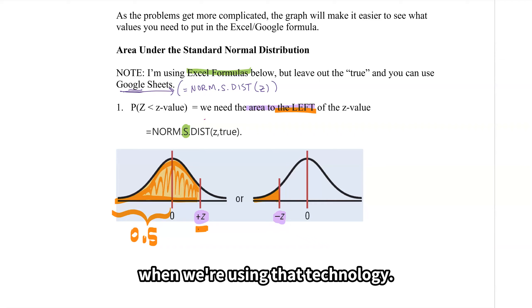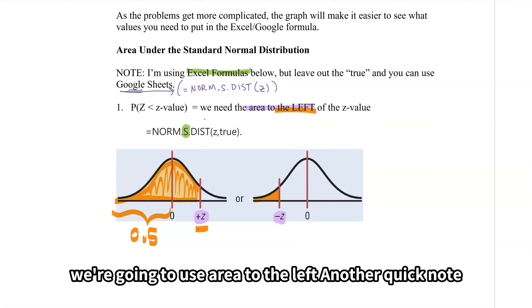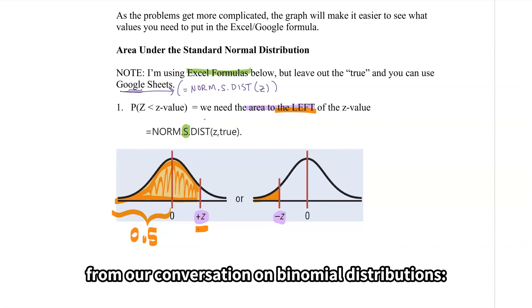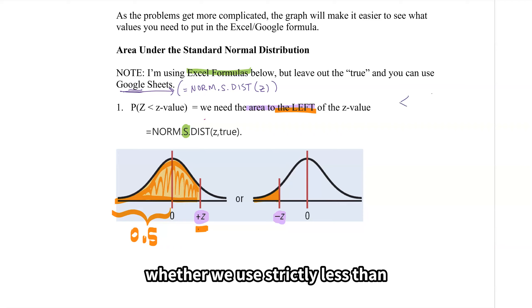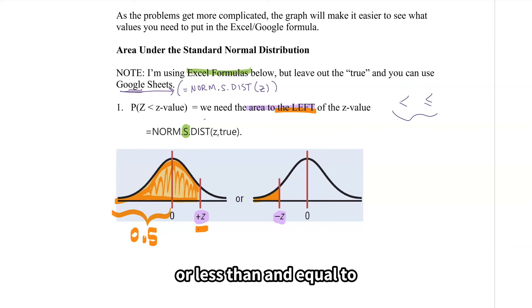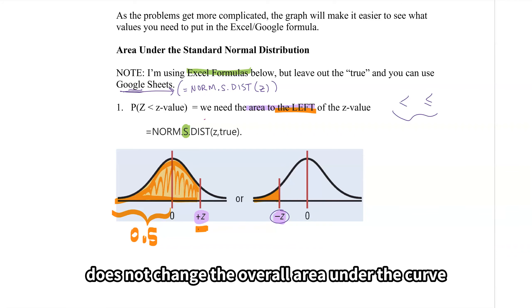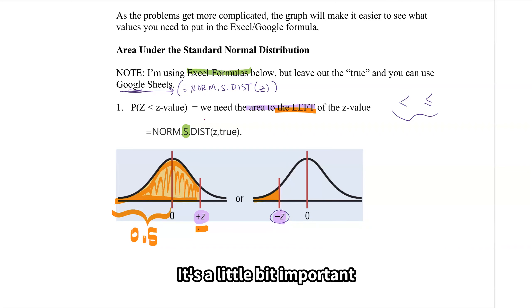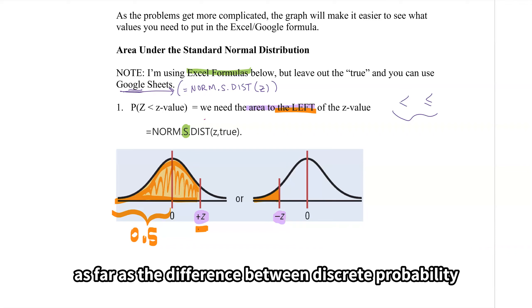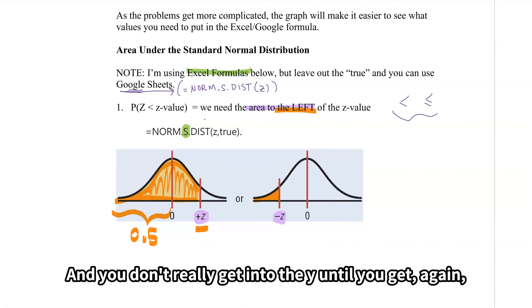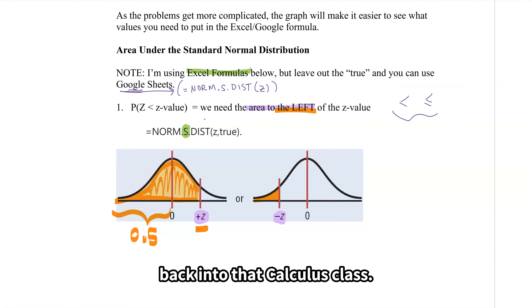For z less than a z value, we're going to use area to the left. One quick note that makes this slightly different from our conversation on binomial distributions: whether we use strictly less than or less than and equal to, they're going to give us the same probability. Including this z value or not does not change the overall area under the curve. The reason why gets into the difference between discrete and continuous probability distributions, which you don't really explore until calculus.